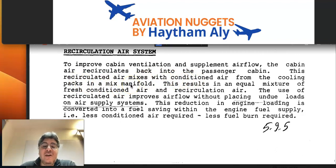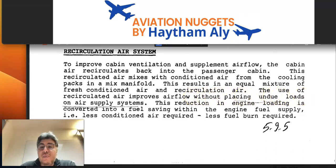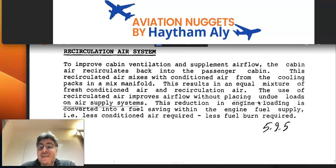How do we get the air from the cabin into the mixing chamber? Thanks to the recirculation fans. This results in an equal mixture of fresh conditioned air and recirculated air, which decreases the load on the bleed air system from the engine. The use of recirculated air improves airflow without placing undue loads on the air supply system, and the bleed air taken from the engine is decreased, reducing fuel consumption.